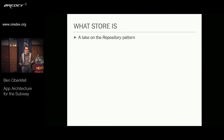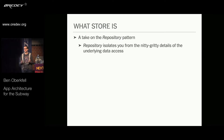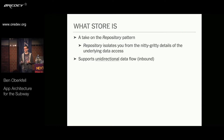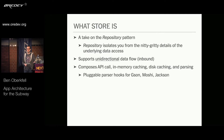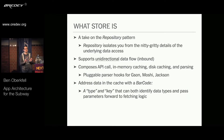Store is a take on the repository pattern — it isolates you from the nitty-gritty details of how the underlying data is accessed. Store gives you a unidirectional data flow for things inbound from a backend, like the featured screen or news articles. It composes an API call to a backend, in-memory caching, disk caching, and parsing from a network flow to your data model objects. No matter what parser you like to use — gson, moshi, jackson — we've got you covered. You address data in the cache with a concept called a barcode: a type and a key that identifies a data type and passes parameters into your fetching logic. For example, building a Reddit client, you might have a type called reddit posts and pass the subreddit name as the key.